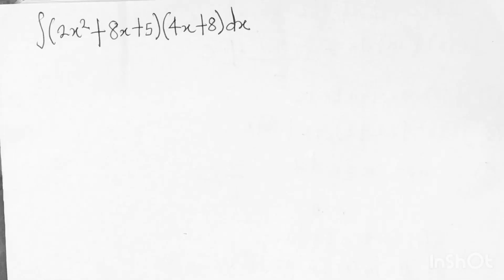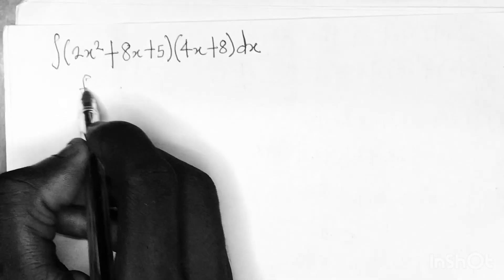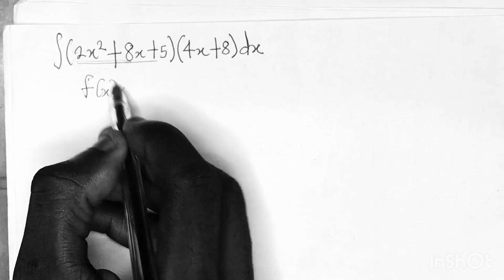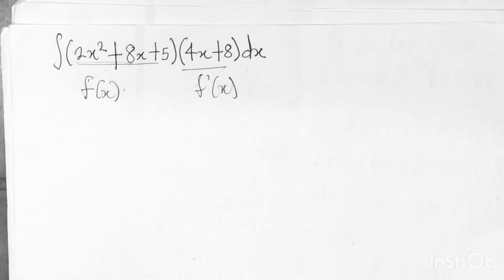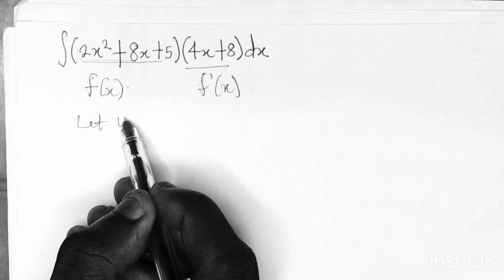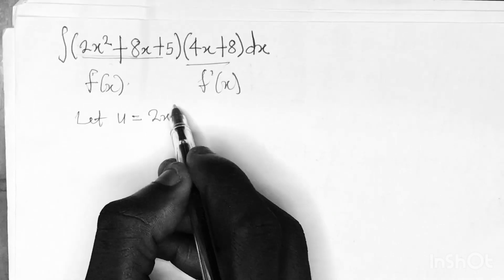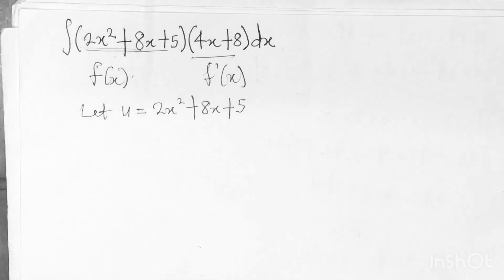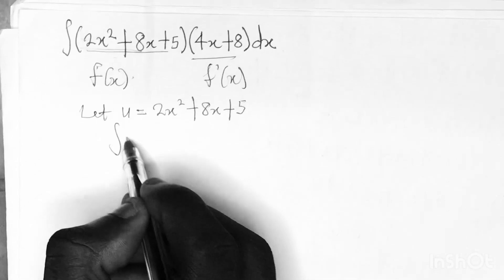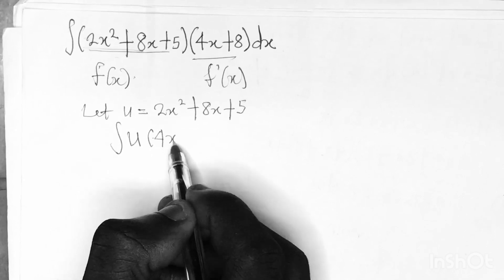For the second example, we have the integral of (2x² + 8x + 5)·(4x + 8) dx. Since we are doing an integral of the form f(x)·f'(x) dx, we know that f(x) = 2x² + 8x + 5 and f'(x) = 4x + 8. Let u = 2x² + 8x + 5, so the integral becomes ∫ u·(4x + 8) dx.